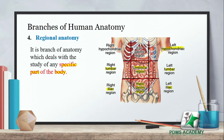The body can be divided into regions such as the epigastric region, hypochondriac region, and others. If we study body parts in different regions, it is called regional anatomy. For example, the epigastric region contains the stomach, the umbilical region contains the small intestine, the left lumbar region contains a kidney, and the right hypochondriac region relates to the liver.